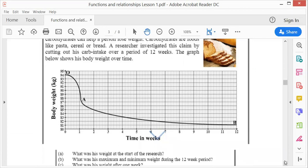First question. What was the weight at the start of the research? At the start, oh, there you are, 94 kilograms. What was his maximum and minimum weight during the twelve-week period? So maximum was 94 and minimum was 81. Can you see, guys? 81 kilograms.